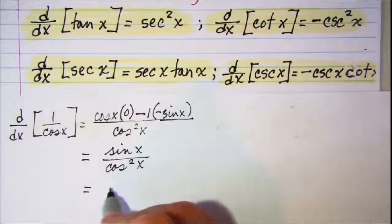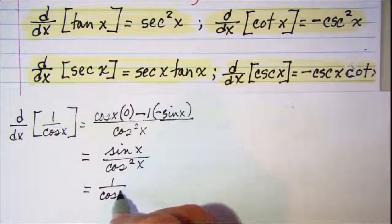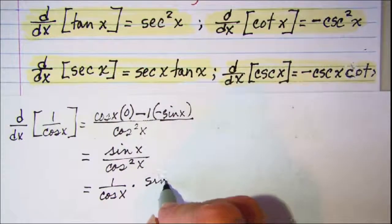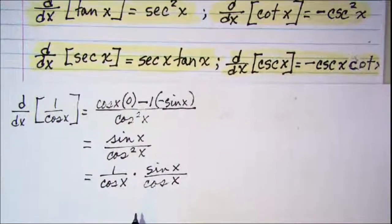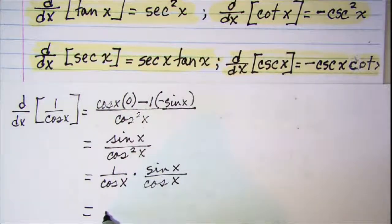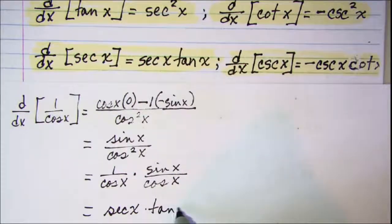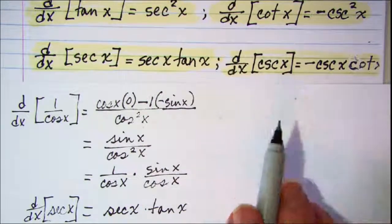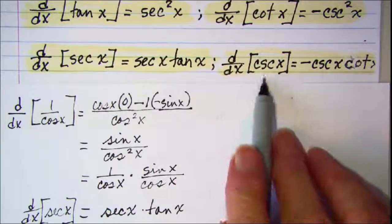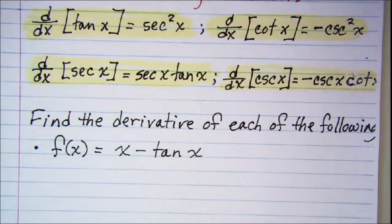That gives us one over cosine x multiplied by sine x over cosine x. We know one over cosine x is secant and sine over cosine is tangent, so the derivative of secant x is secant x times tangent x. Similarly, cosecant is one over sine and its derivative follows the same process. Let's do some problems.